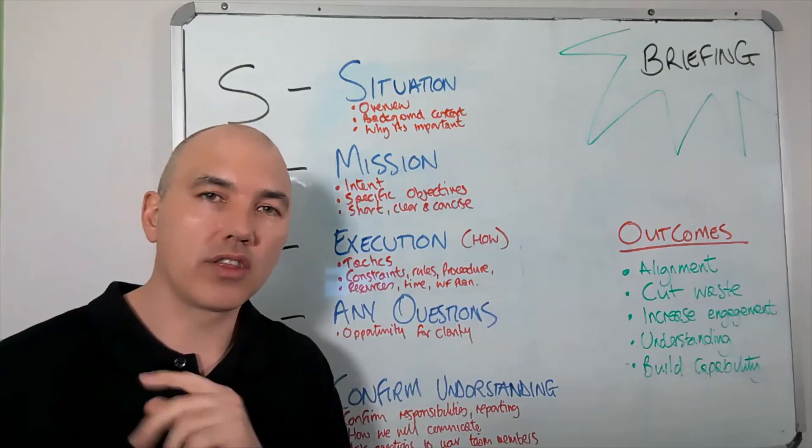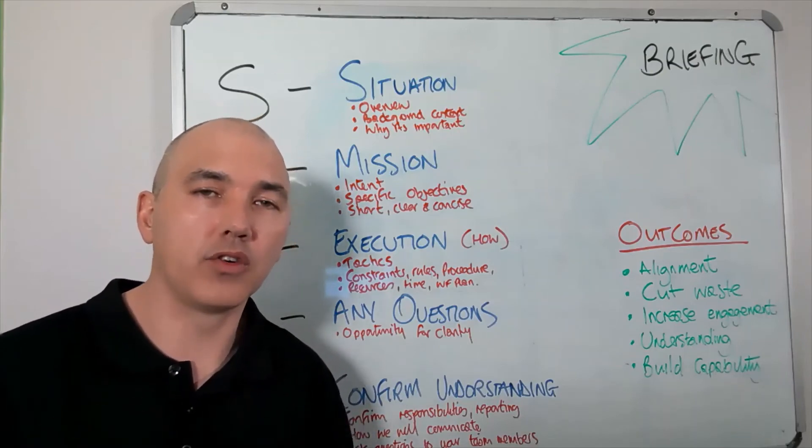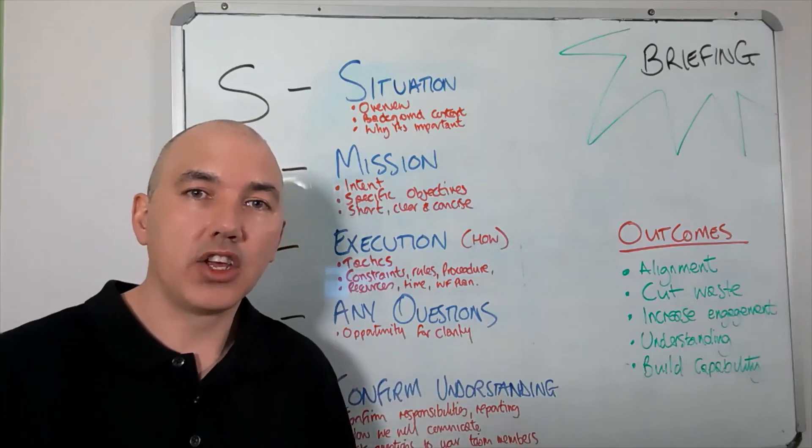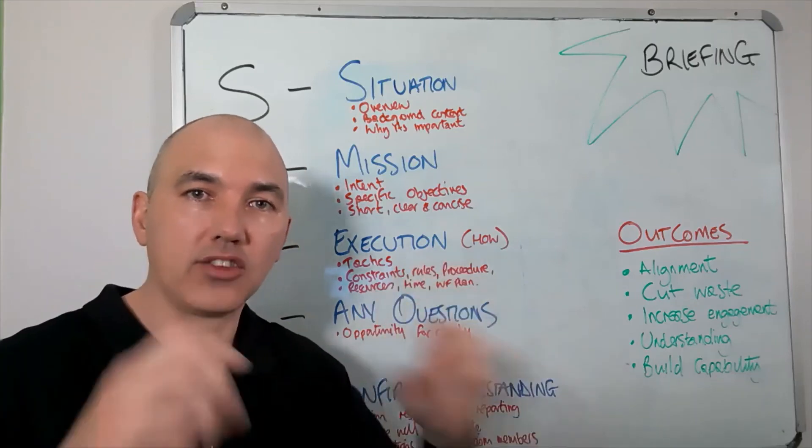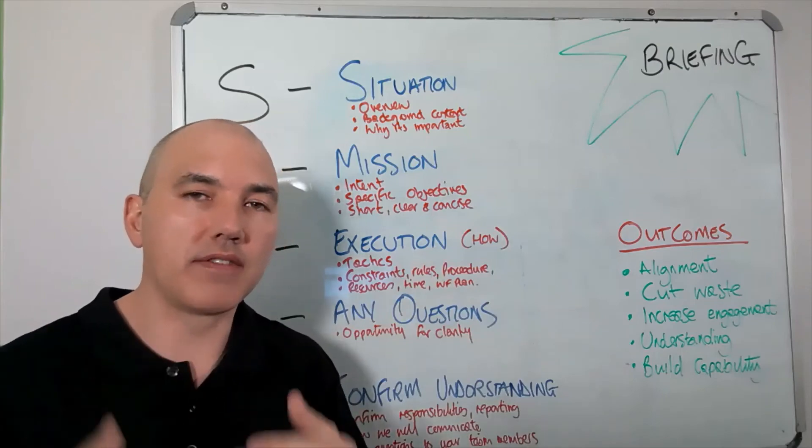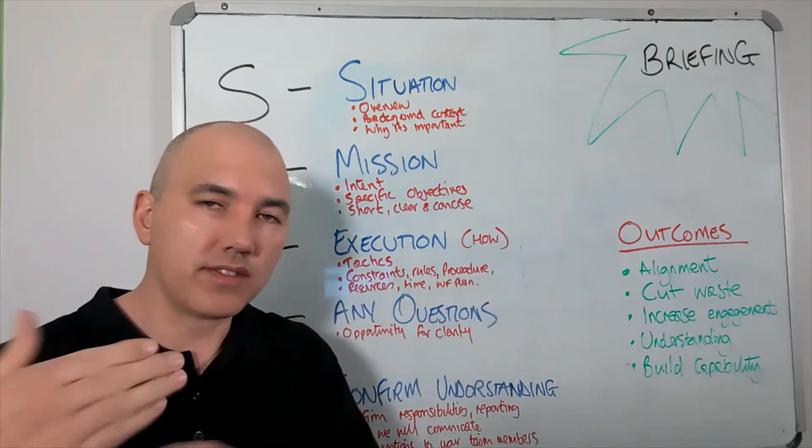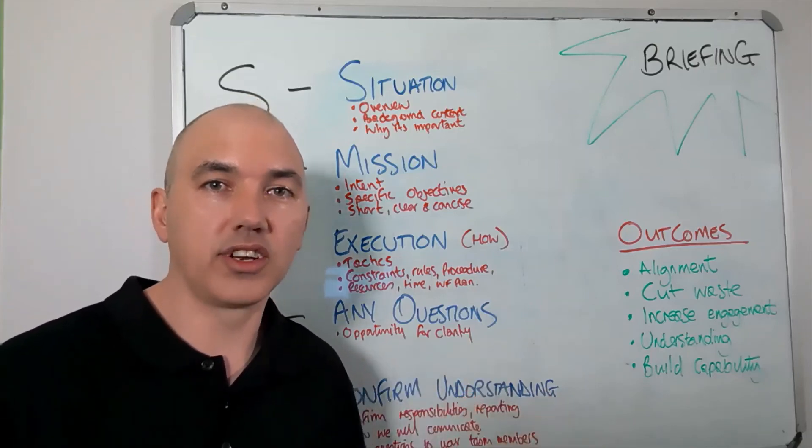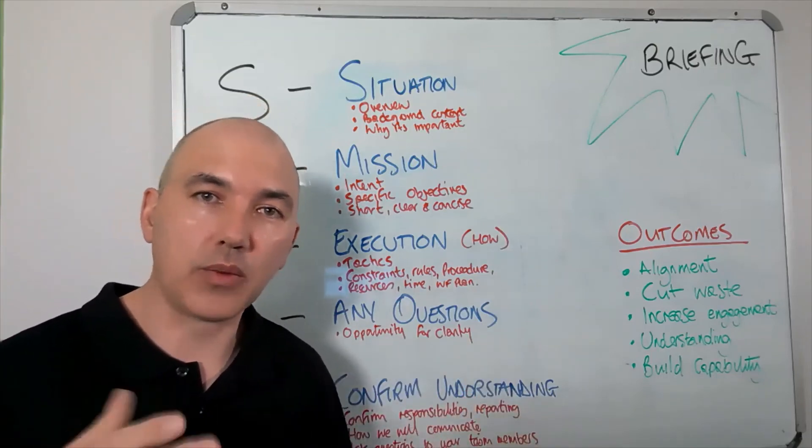Number two, you've got to cut waste. So rather than going back and forward, back and forward, back and forward, by clearly articulating what the result's going to be and what that looks like, then you're enabling your team to go away, to do it, to then come back, rather than having multiple conversations and multiple emails and multiple reports that look nothing like what you've asked. You're going to actually give them all those resources and tell them where to go.